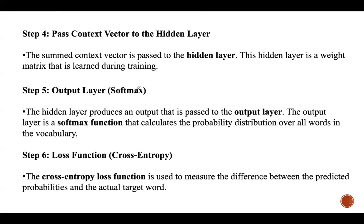Step four is to pass the context vector to the hidden layer. The summed context vector is passed to the hidden layer, which is a weight matrix learned during training. If the context vector size is V (the vocabulary size) and the embedding size is N, then the hidden layer is a matrix of size V×N. This matrix multiplies the context vector to create a hidden representation of the context.